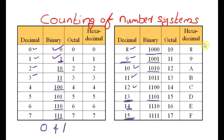In the case of the octal number system, counting starts from 0, 1, 2, 3, 4, 5, 6, 7. The symbols range from 0 to 7, so 8 and 9 are not present in the octal number system. After 7, it goes to 10, then 11, 12, 13, and so on up to 17. After 17, it goes to 20, then 21, and so on. This is how counting works in the octal number system.